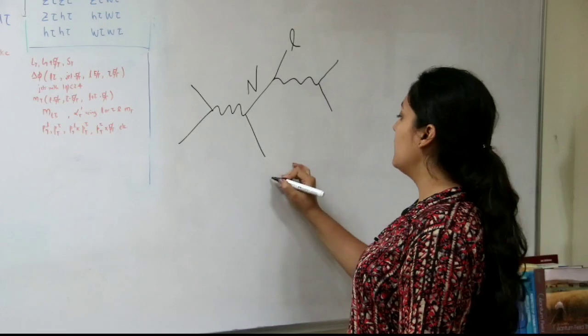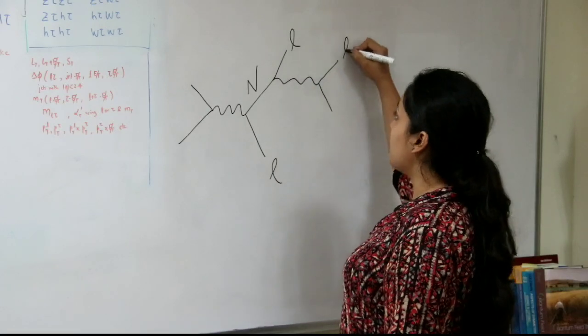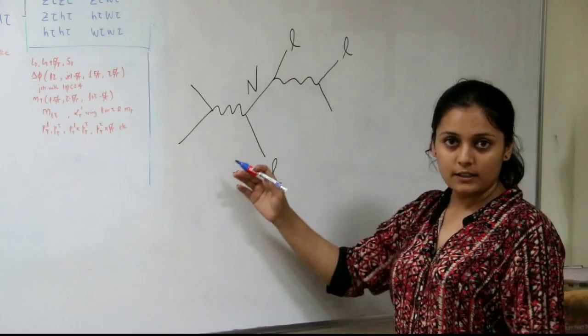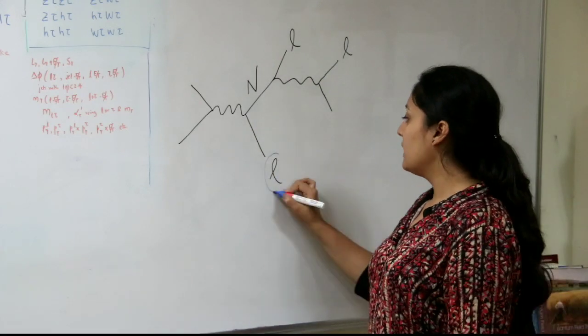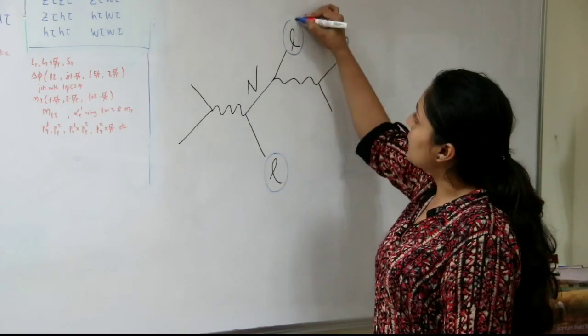So when they decay into leptons then you can actually see this kind of diagram is called Feynman diagram and you can see here that three leptons are produced.